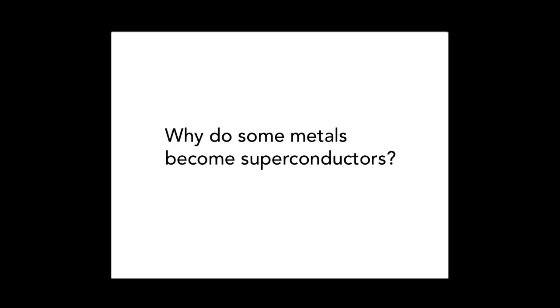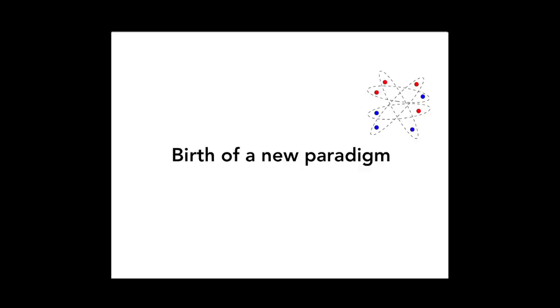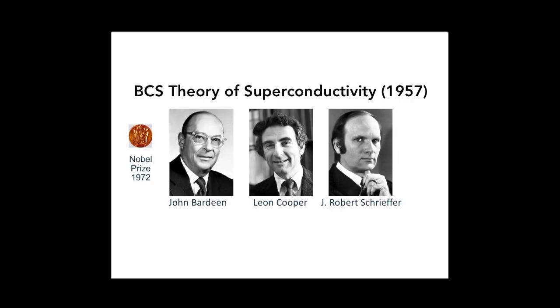Now let's step back and ask — why is this happening? What is it about the superconductor that gives it these properties? This is where we have huge developments in theory that bring forward the birth of a new paradigm. Standard ways of understanding materials are not enough to explain this new state of matter. It required a birth of a new paradigm by three theorists: John Bardeen, professor at the University of Illinois Urbana-Champaign; Leon Cooper, his postdoctoral associate; and Robert Schrieffer, his graduate student. The discovery happened in 1911 and it took almost 50 years for the theory to be developed — because it required a complete change of thinking, a new paradigm.